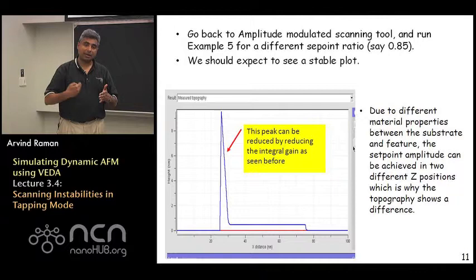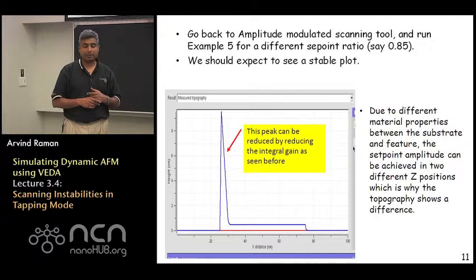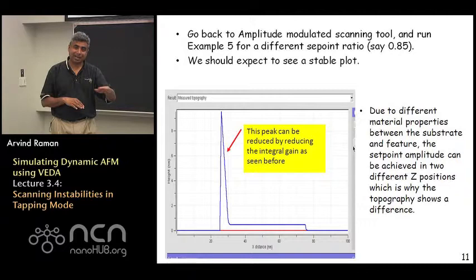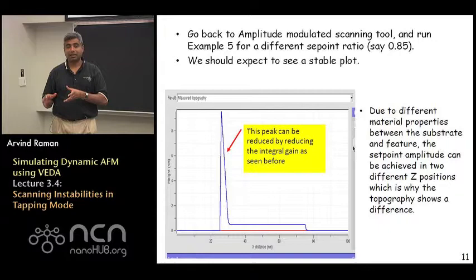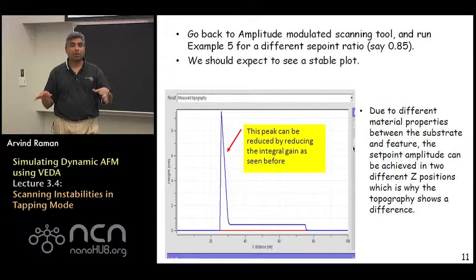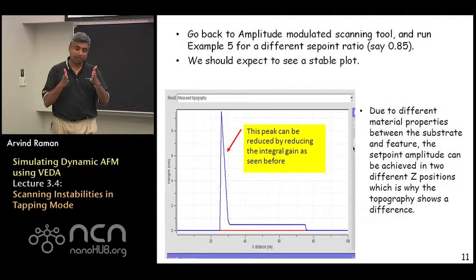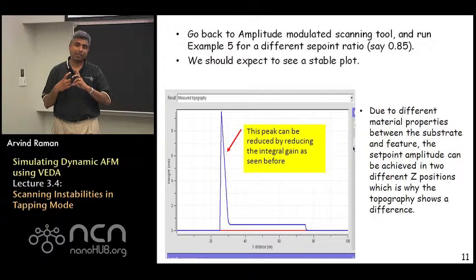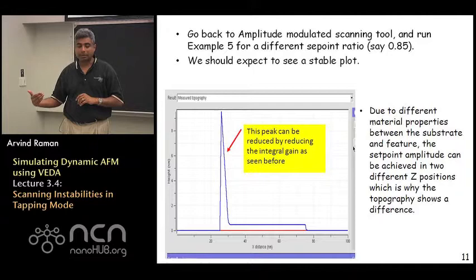The other thing I want to highlight here is the fact that the measured topography which is what is shown on this graph is not flat all the way through even though in the simulation we had created an absolutely flat surface. The actual topography being measured here is not flat. It is flat while you are on the substrate, but when you reach this feature, the feature is going to appear to be a little higher than the substrate. Why is that so? Especially because the elastic modulus of both the feature and the substrate are identical. Why is it that the feature is going to appear to be a little higher?